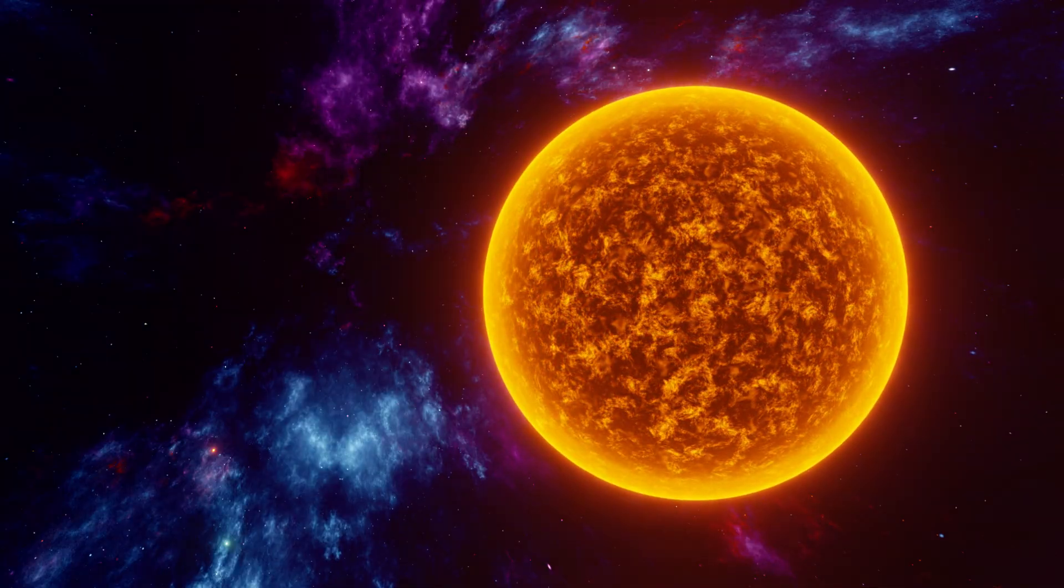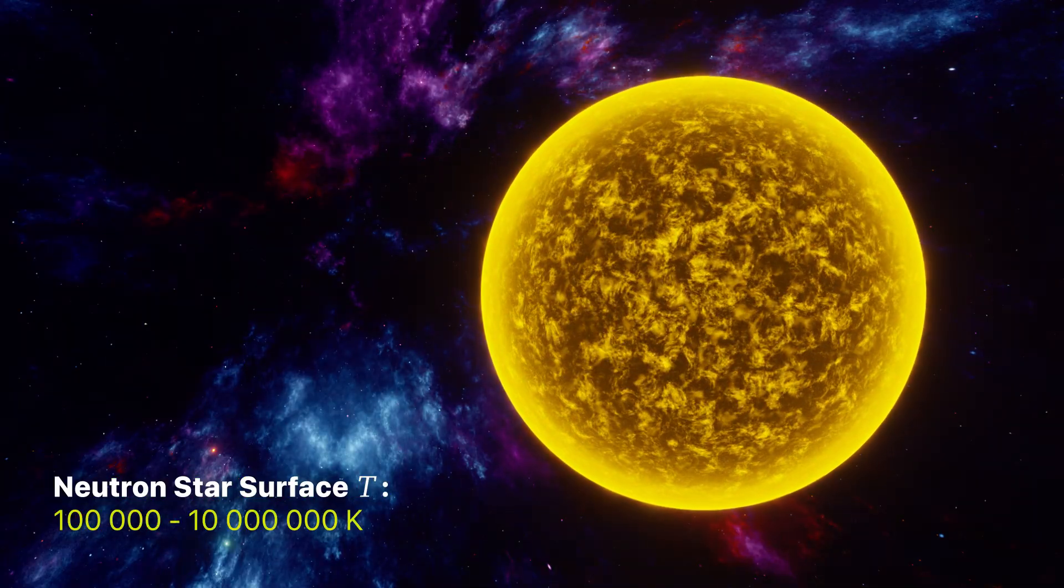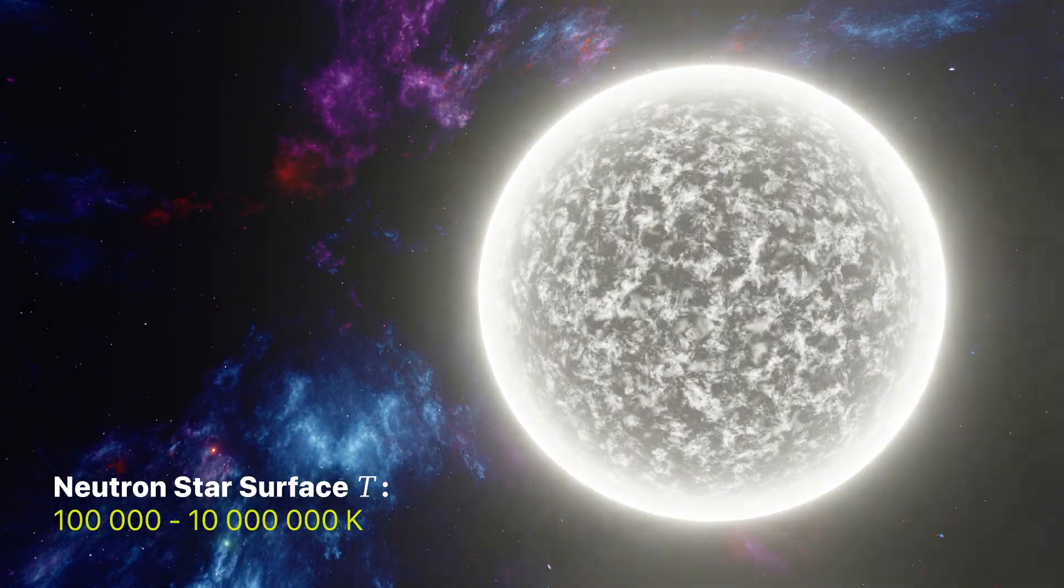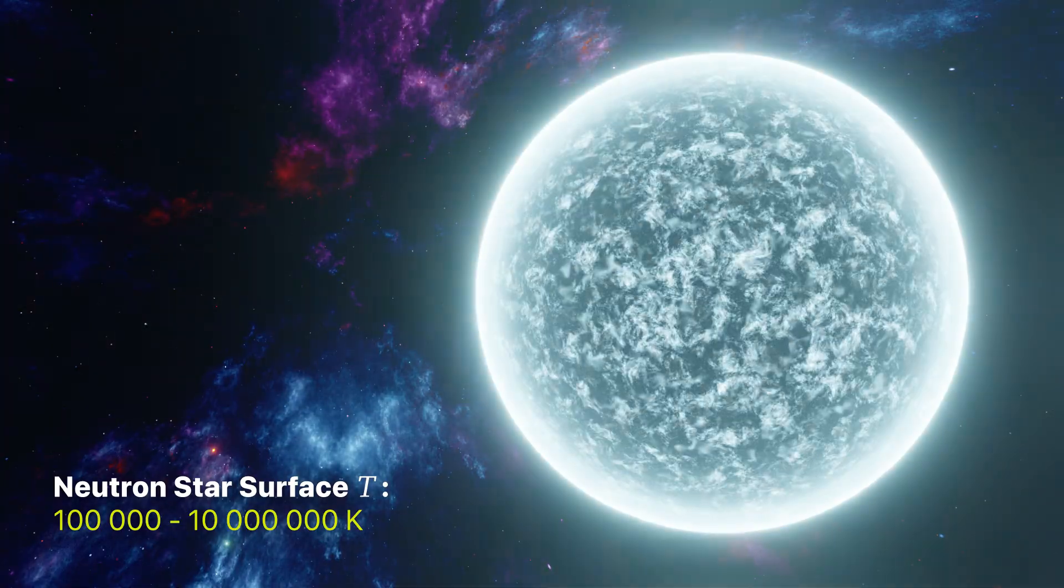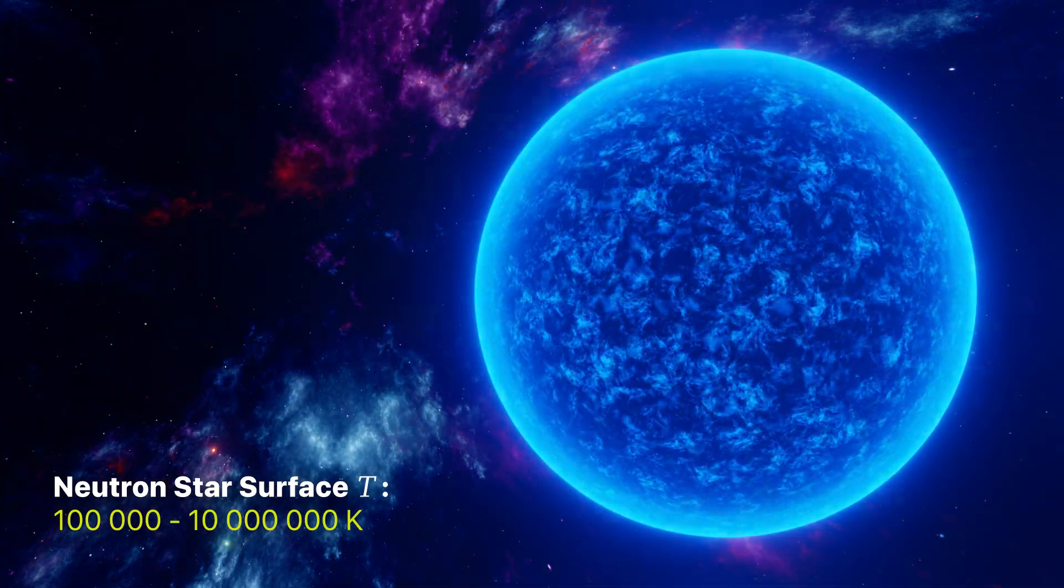They are very hot, initially 1 million kelvin at the surface compared to 5800 kelvin for the sun. The surface of a neutron star is not any place you would want to visit.